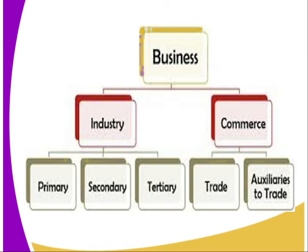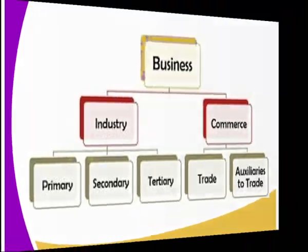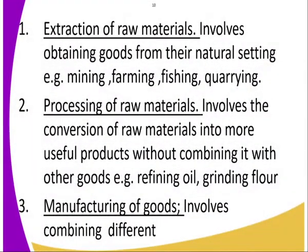We start by the primary ones. Primary activity is the extraction of raw materials. It involves obtaining goods from their natural setting. Examples include mining, farming, fishing, and quarrying — we are getting raw materials from their natural settings.